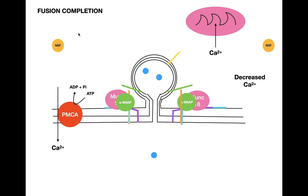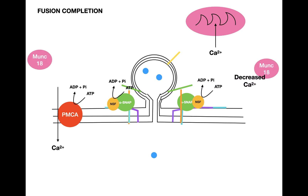NSF comes in and binds to alpha-SNAP. NSF is an ATPase, so it uses the power of ATP hydrolysis to dissociate the entire complex — all of these proteins from each other. As this is occurring, more and more neurotransmitters are being released into the synapse.